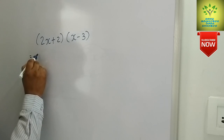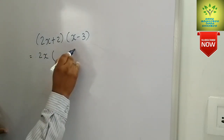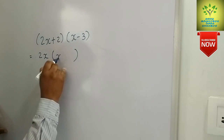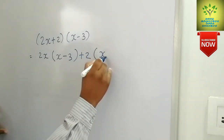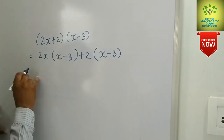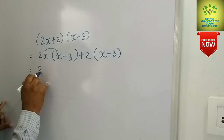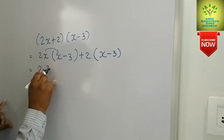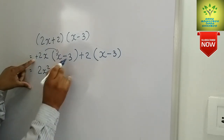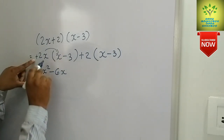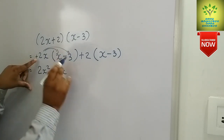Now the second problem is (2x+2)(x-3). First we write 2x in the bracket with x minus 3, then plus 2 in the bracket with x minus 3. We multiply 2x by x to get 2x squared, and 2x times minus 3 gives minus 6x.